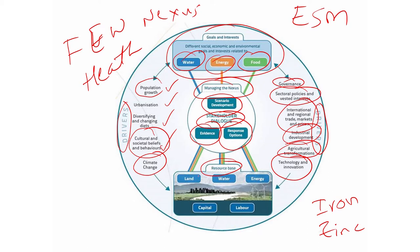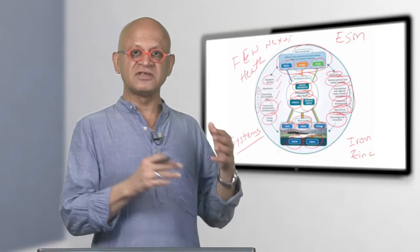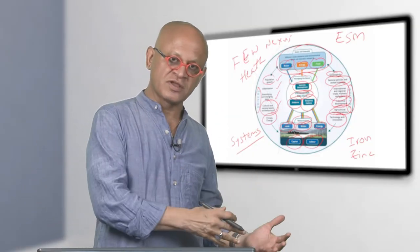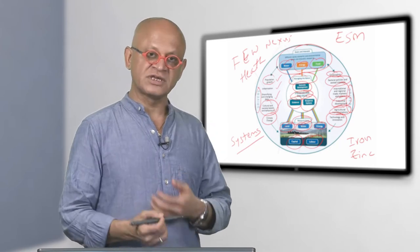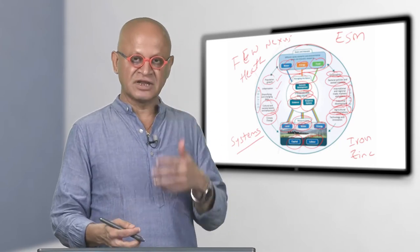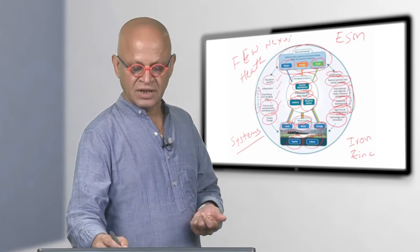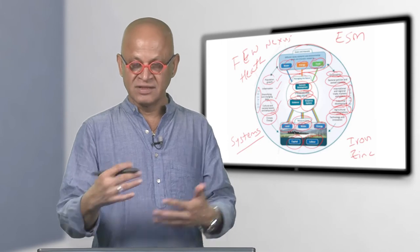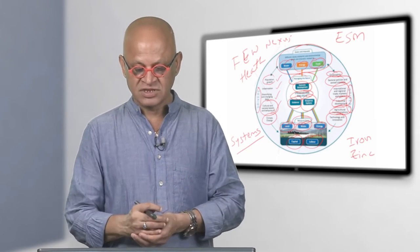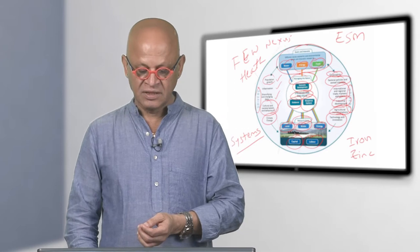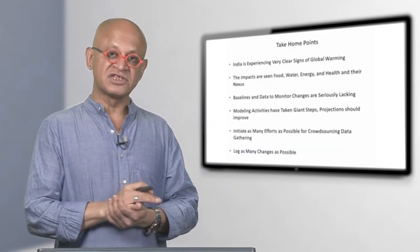The resource base for managing this nexus is the land, water, energy, capital and labor. This is a complicated system, often called as systems approach. You do not try to manage just water or just energy or just food - you try to combine all of them together. This is complicated but now it is definitely moving in a more systems approach.